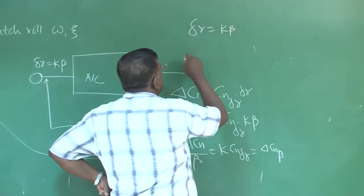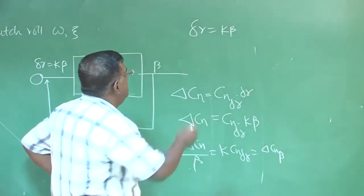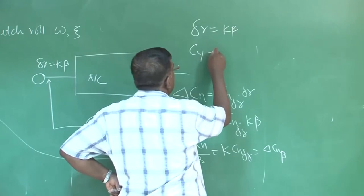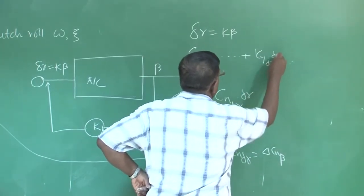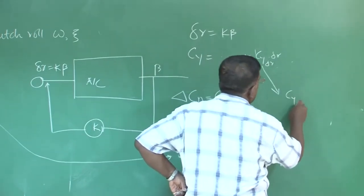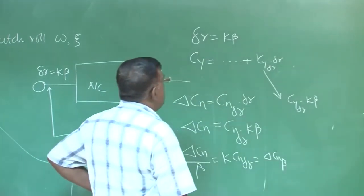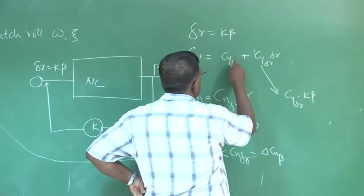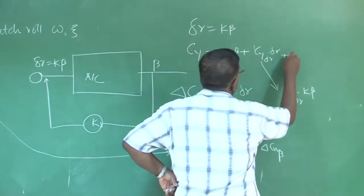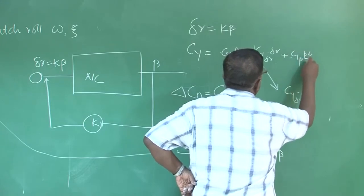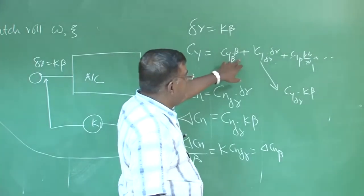if I am deflecting delta r as k beta, then what happens is there any other derivative that gets affected? See that in c y, we have one term called c y delta r into delta r. So, this will now get additional effect c y delta r into k beta. So, here we had c y beta into beta, then may be c y p into p b by 2 e or 2 e 1 like this. So, now,